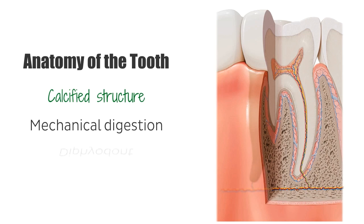Human beings are diphyodont, which means that they develop two sets or two generations of teeth. The first set is referred to as the deciduous dentition, whilst the second set is known as the permanent dentition. The complete set of deciduous dentition is 20, whereas the complete set of permanent dentition is usually around 32.